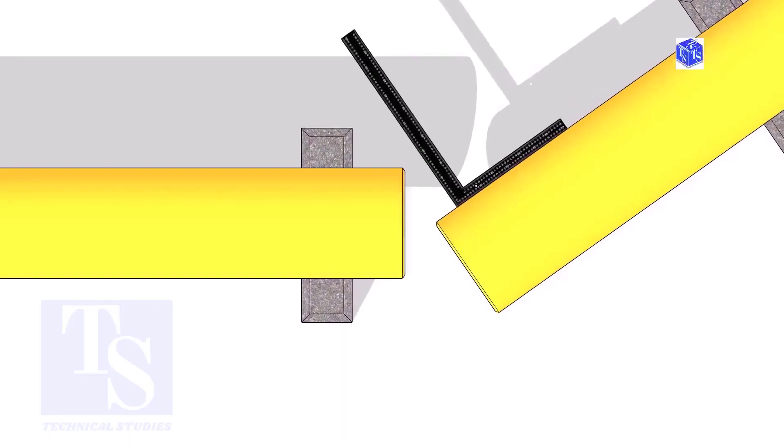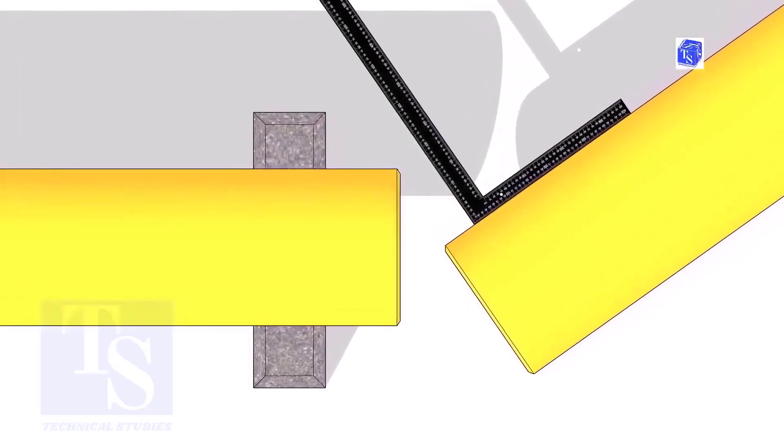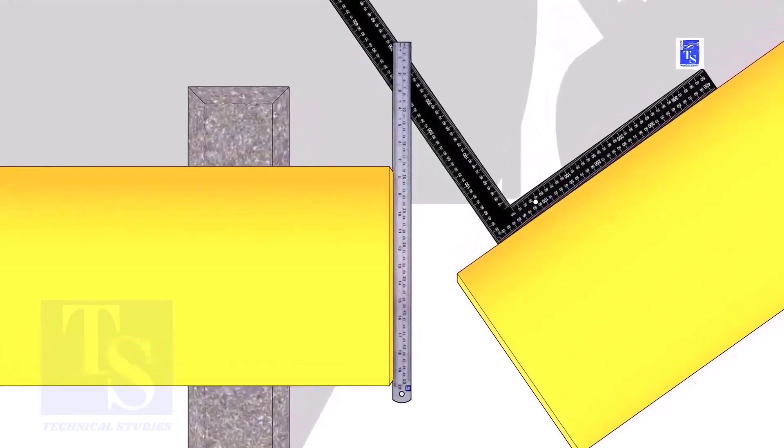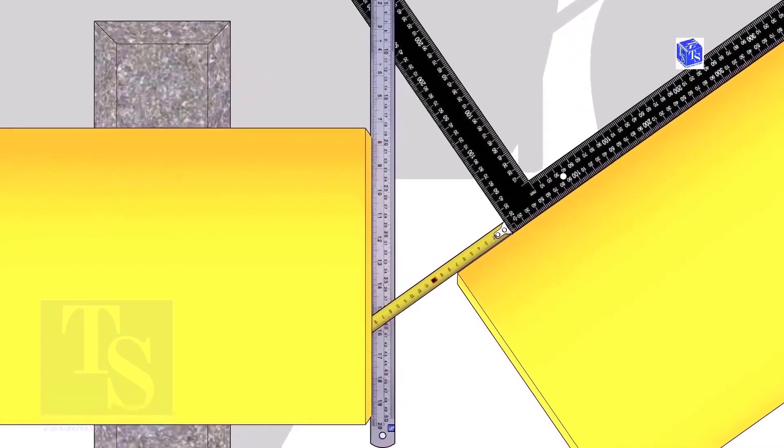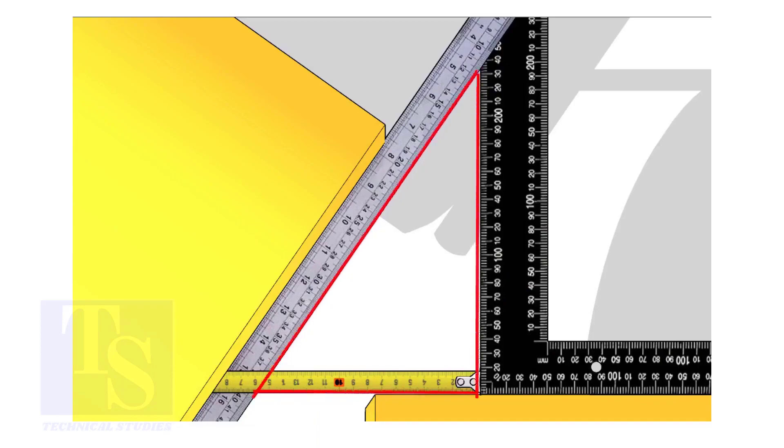Hold a right angle on the pipe as shown. Hold a scale on the other pipe as shown. Measure and note down the dimensions of the triangle.